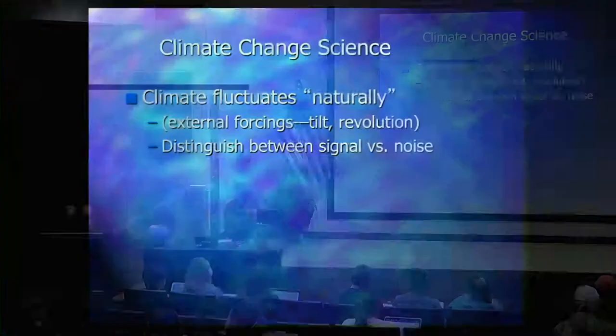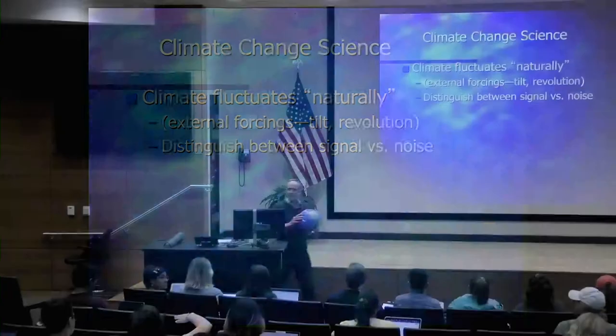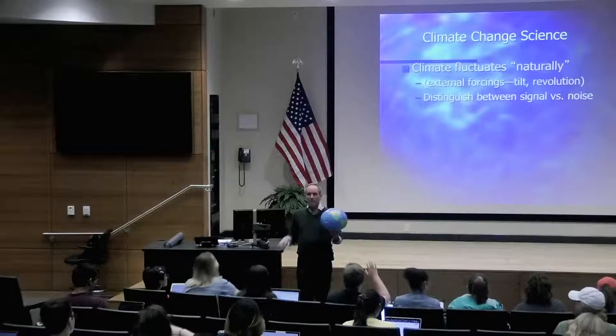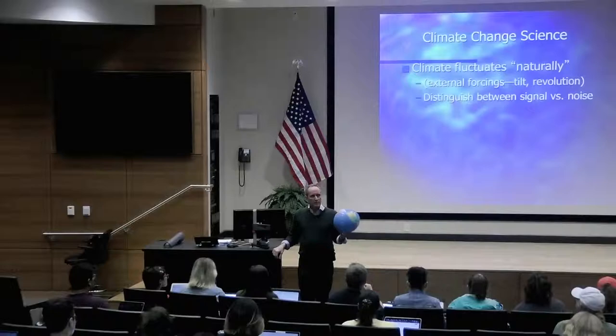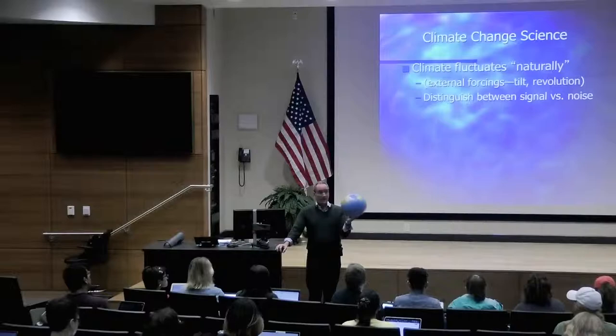So let's talk briefly about the science — I know you've been exposed to some of this before. Tell me what you know already about the tilt of the earth. Roughly a 20-degree angle? Our tilt is actually 23 and a half degrees from the perpendicular, and that is responsible for our seasons.